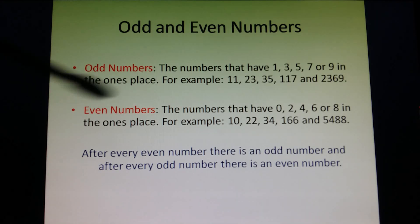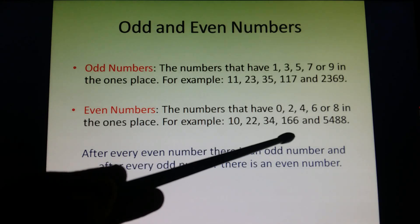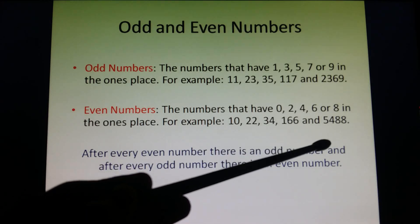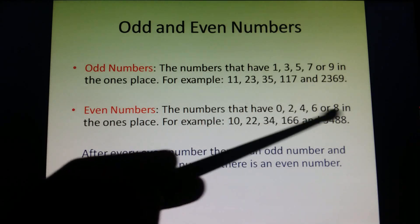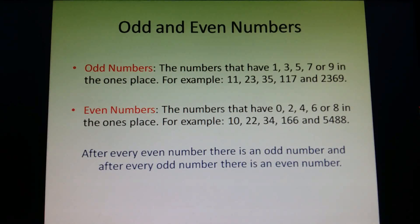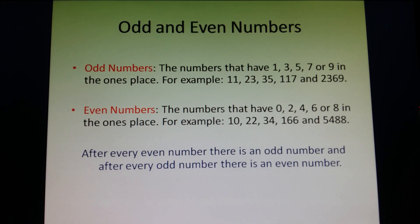For example: 10, 22, 34, 166, and 5488. We have 0, 2, 4, 6, and 8 in the ones place. So odd numbers are not a perfect pair of 2, and even numbers are a perfect pair of 2. After every even number there is an odd number, and after every odd number there is an even number.